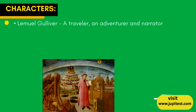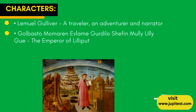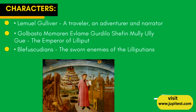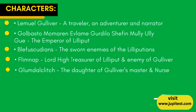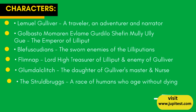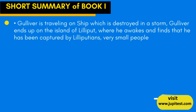Characters: Lemuel Gulliver — traveler, adventurer, and narrator. Golbasto Mamren Evlame Gurdilo Shefin Mully Ully Gue — the Emperor of Lilliput. Blefuscudians — the sworn enemies of the Lilliputians. Flimnap — Lord High Treasurer of Lilliput and enemy of Gulliver. Glumdalclitch — the daughter of Gulliver's master and his nurse. The Struldbrugs — a race of humans who age without dying.